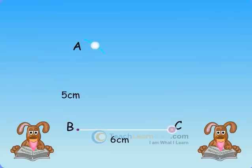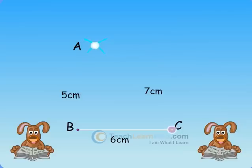From C, point A is at a distance of 7 cm. So, with C as center, draw an arc of radius 7 cm.